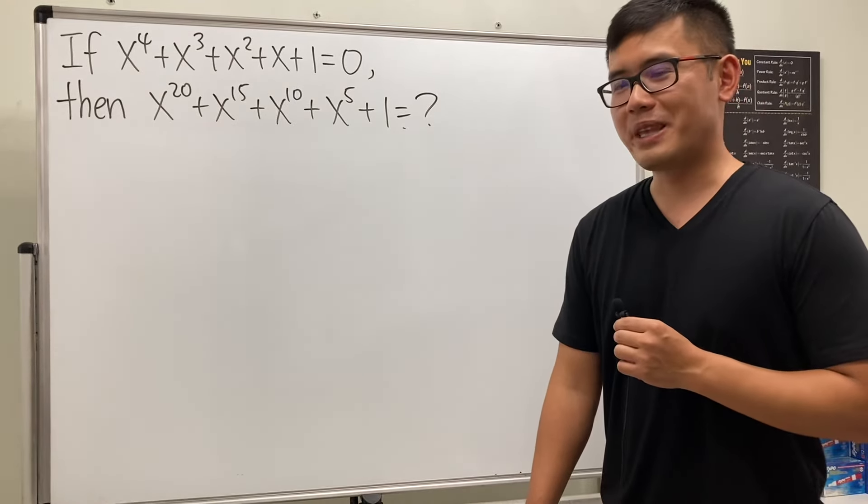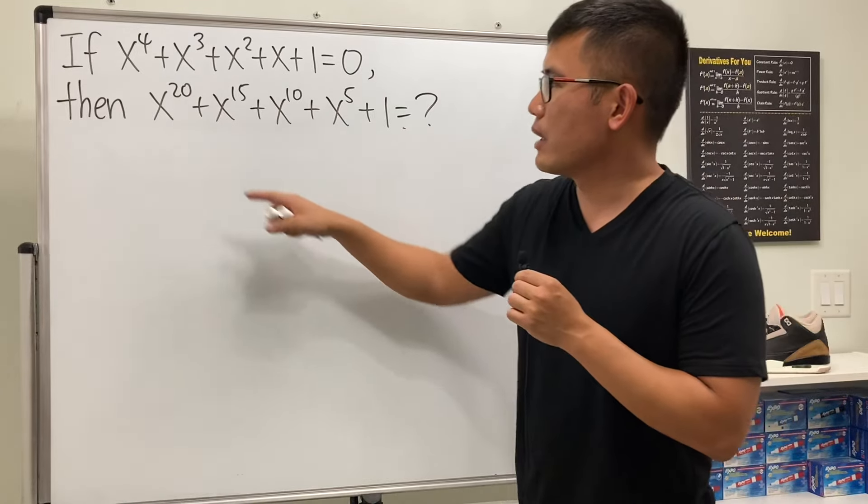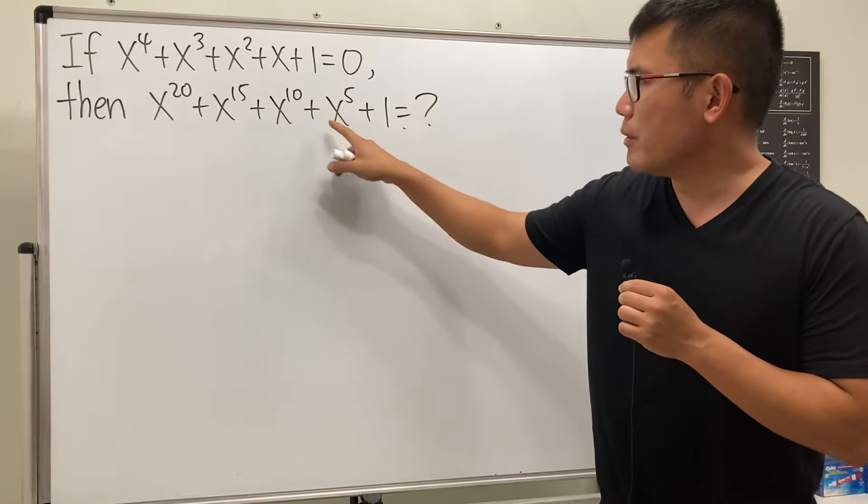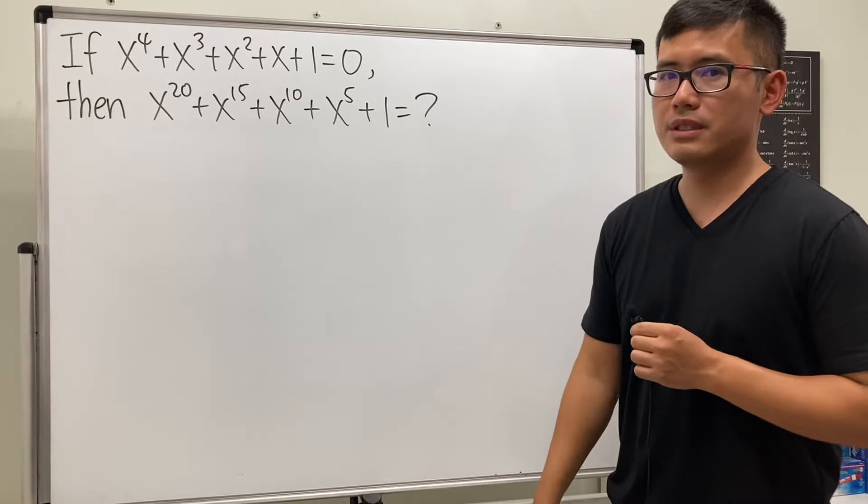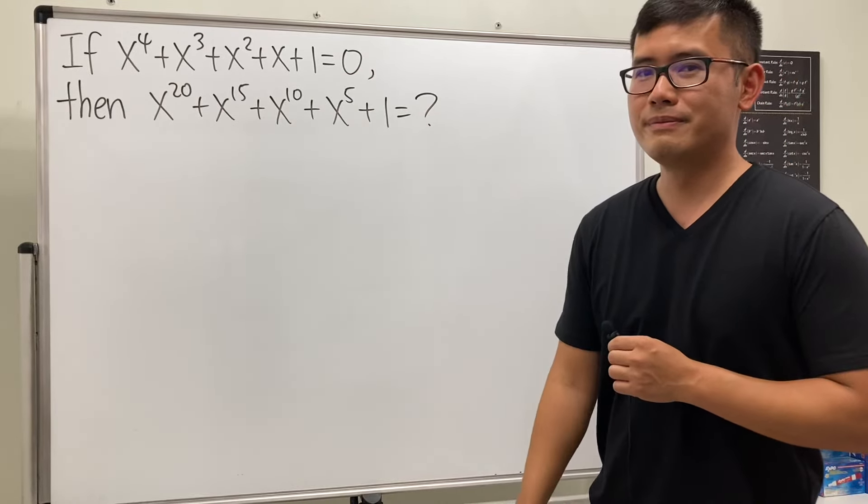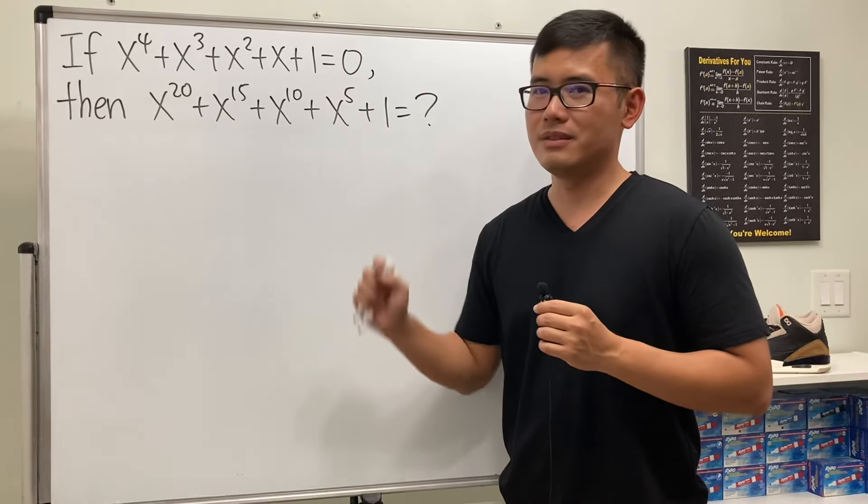Wow, this looks pretty scary, right? We have this polynomial equation and we're going to compute x to the 20th power plus x to the 15th power plus x to the 10th power plus x to the 5th power plus one. Oh man, how do we do it? You can try to solve x right here and then plug in—good luck. Anyway, please pause the video and try this first.